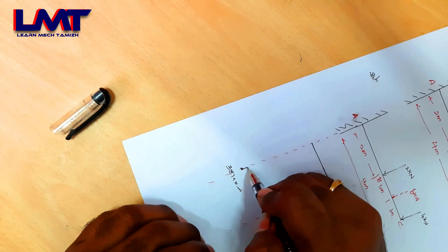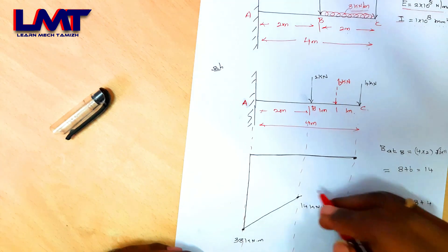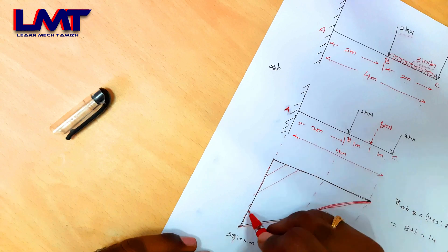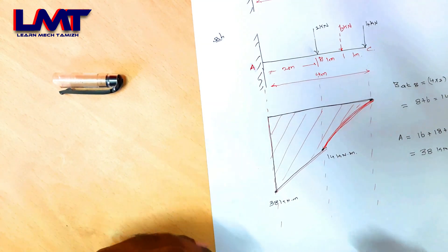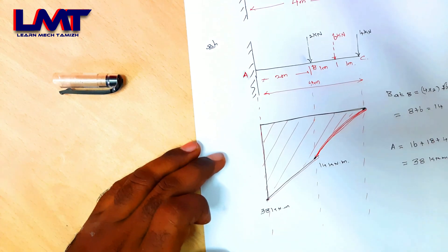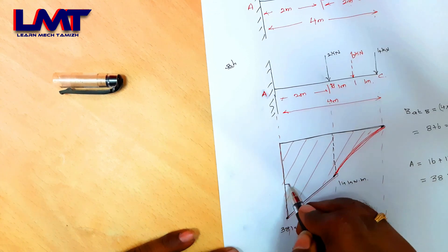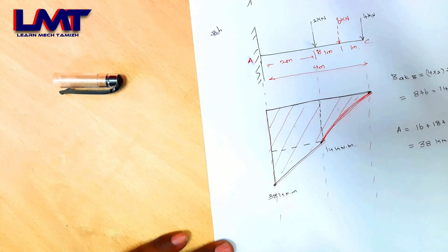So the bending moment values are 14 kNm at B and 38 kNm at E. This gives us the bending moment area diagram, which is an uneven area. To calculate the total area, we cut the diagram into sections: one rectangular section, one triangular section, and one sine curve section.